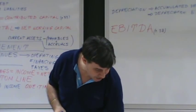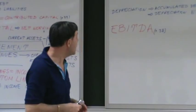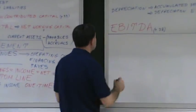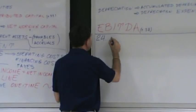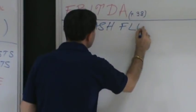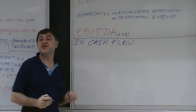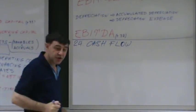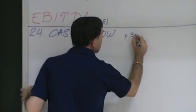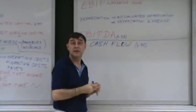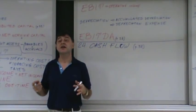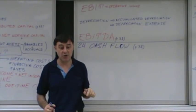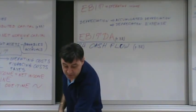That completes section 2.3, the income statement. Now we move to section 2.4: the Statement of Cash Flows, on page 38-39. The statement of cash flows always has three components. Number one: operating activities. Number two: investing activities — long-term investments. Number three: financing activities.